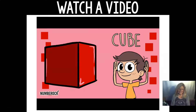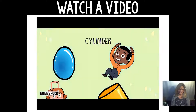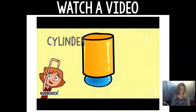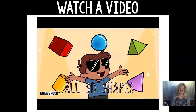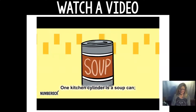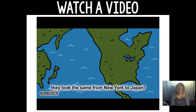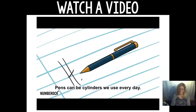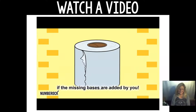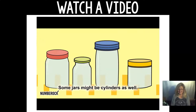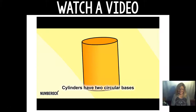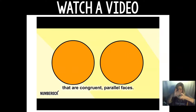Sphere, cylinder, pyramid, cube, cone — singing through the mega. All 3D shapes! One kitchen cylinder is a soup can; they look the same from New York to Japan. Pens can be cylinders we use every day. Power poles are cylinders that bring power our way. Toilet paper rolls are cylinders too, if the missing bases are added by you. Some jars might be cylinders as well. Cylinders have just circular bases that are congruent parallel faces.